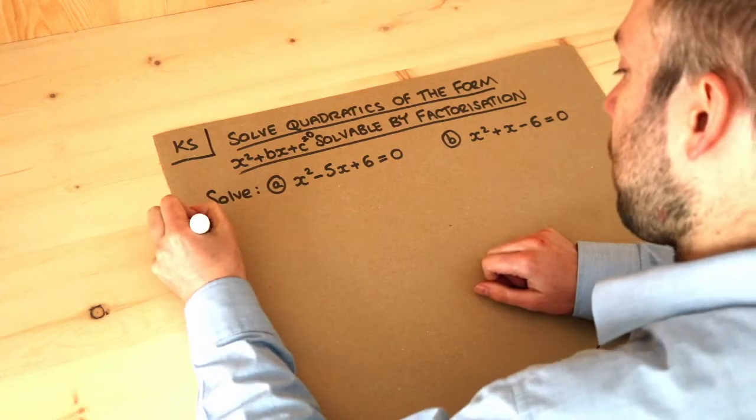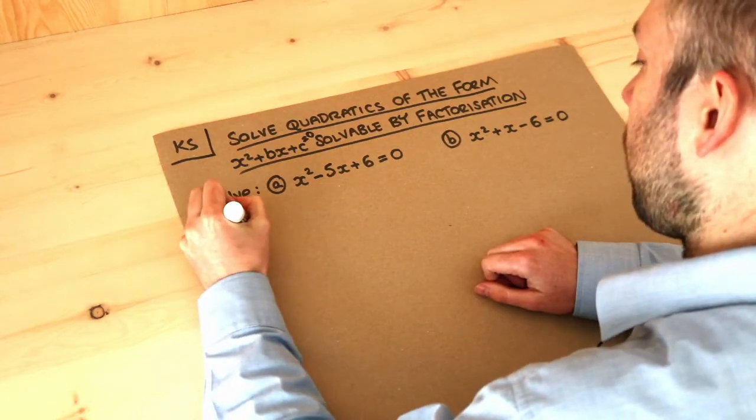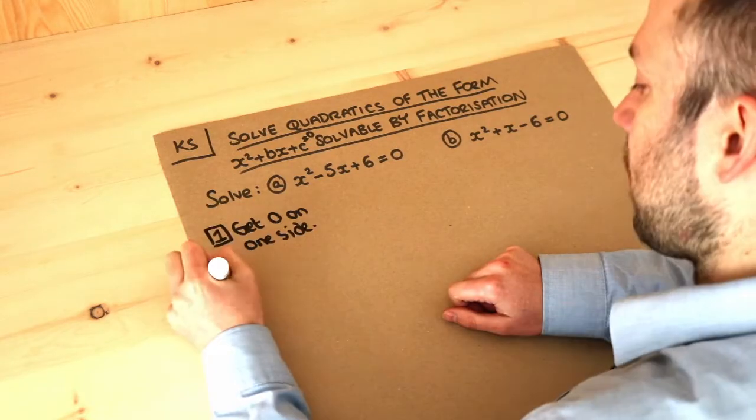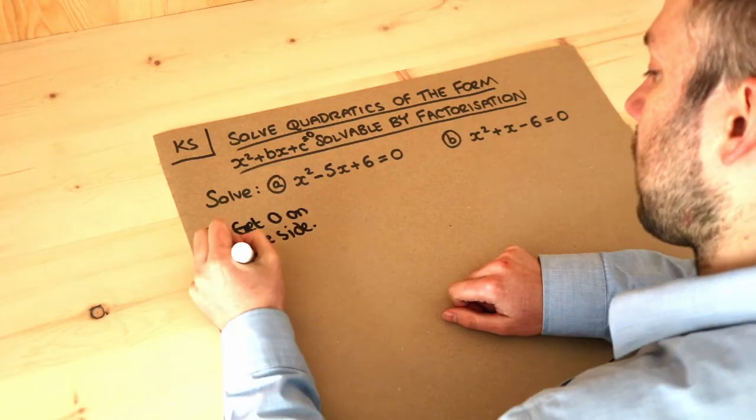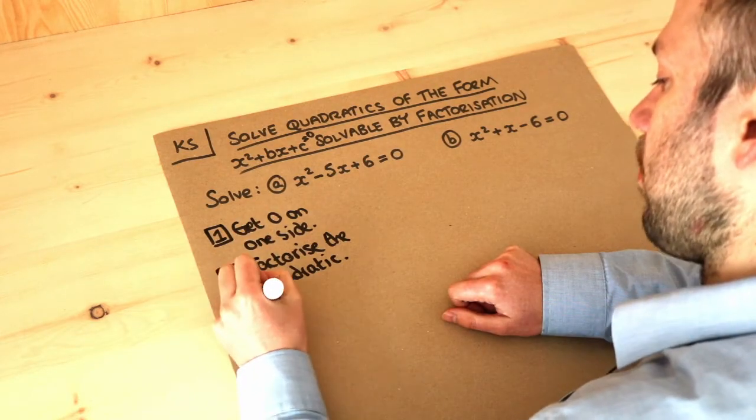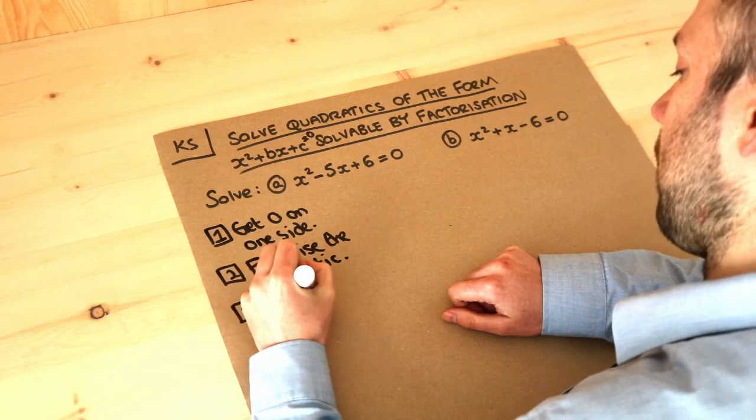The method you want to use is this: you firstly get zero on one side. Now in these examples here we do have zero on one side. The second step is factorize the quadratic, and we saw how to do that in another video. And the last step is to make each factor zero, and I'll explain what I mean by that in a second.